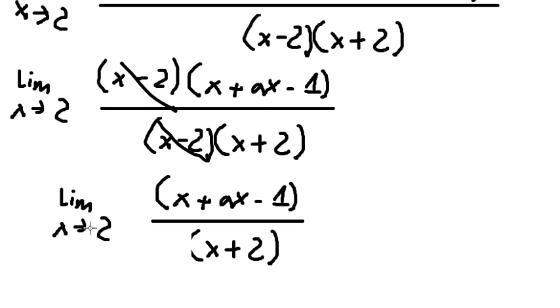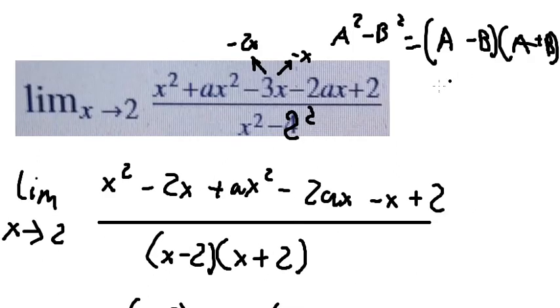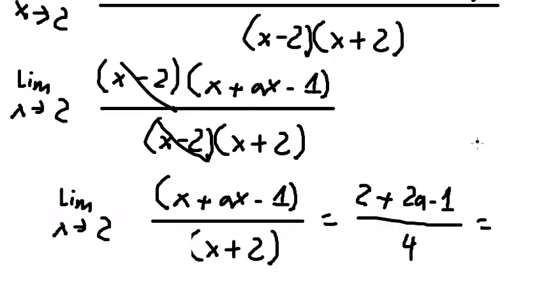So when we put 2 in here, here, and here, we have 2 plus 2a minus 1 over 4, and this one equals to 3 over 4.